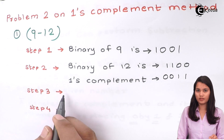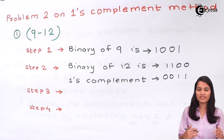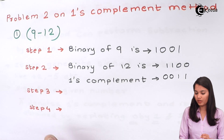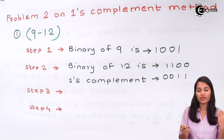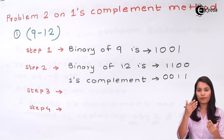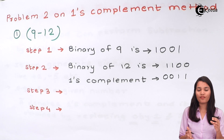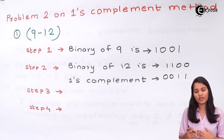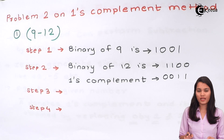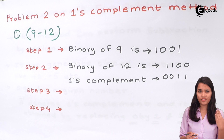Step 3 is to add step 1 and step 2. This step plays a very important role. In this step you will be able to know whether the answer is positive or negative. After adding step 1 and step 2, if you have a carry present as 1 then your answer is positive. And if you don't have any carry, that means your answer is negative. Let's see whether we will get a positive or negative answer.